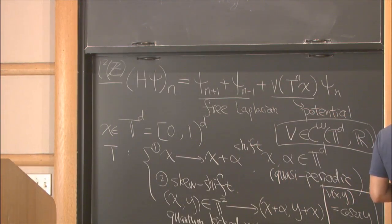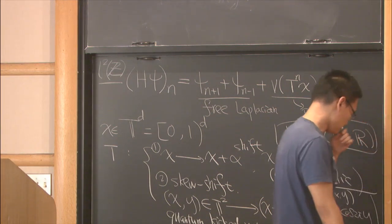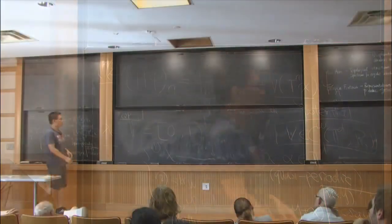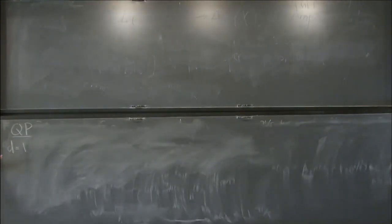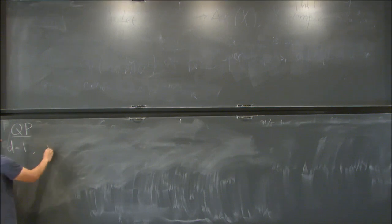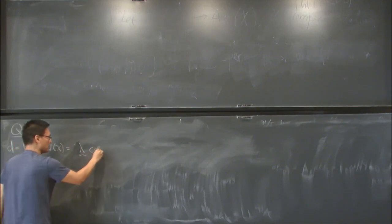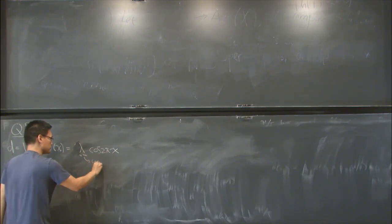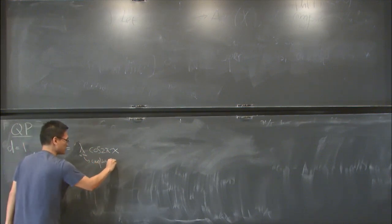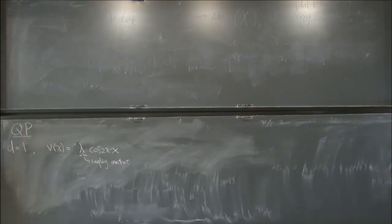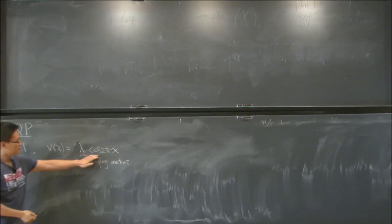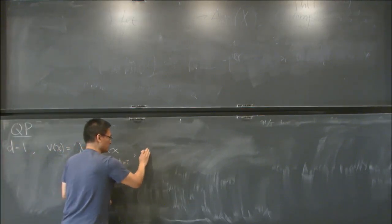Let me start with quasi periodic. So what do we know for quasi periodic in, for example, one dimensional? If d is equal to 1, then you have [0,1] circle and the shift on the circle. Let's take the simplest possible function for v, for example, when v is equal to, we introduce a coupling constant λ. So if we take this very simple form, then it is known as Almost Mathieu operator.